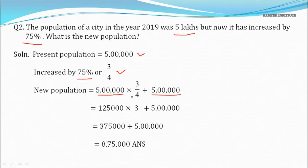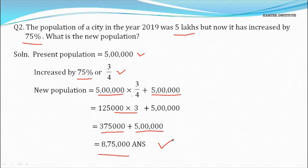5 lakh × 3/4: cancelling 4 with 5 lakh gives 1 lakh 25 thousand × 3 = 3 lakh 75 thousand. Adding the original population of 5 lakh gives 8 lakh 75 thousand, which is the new population after a 75% increase.